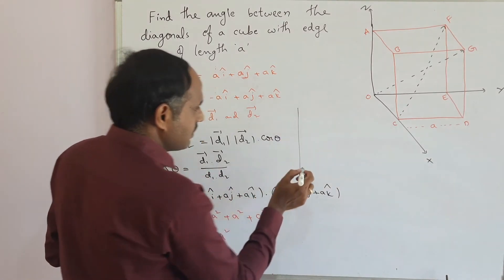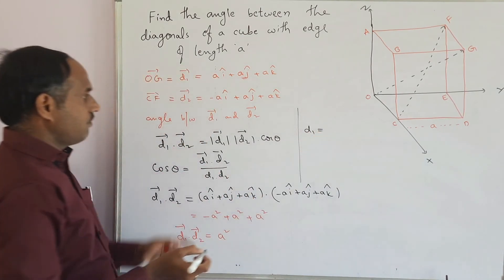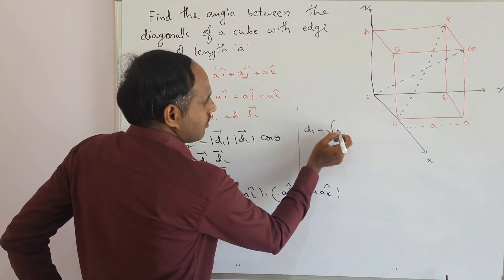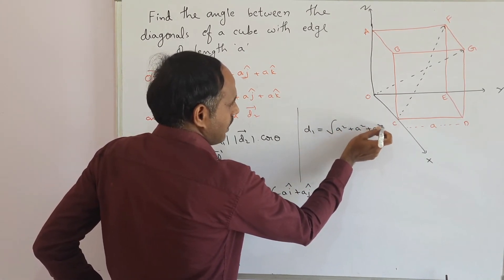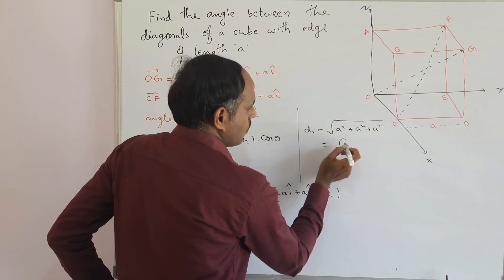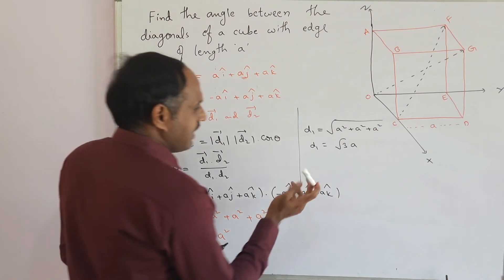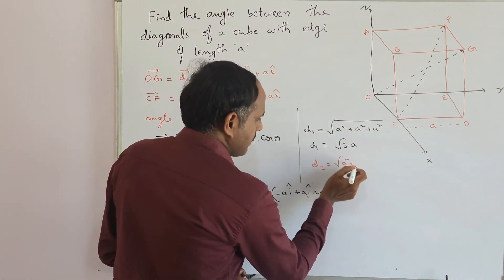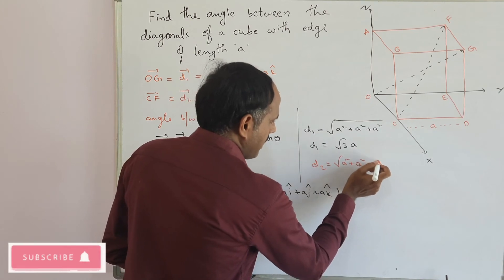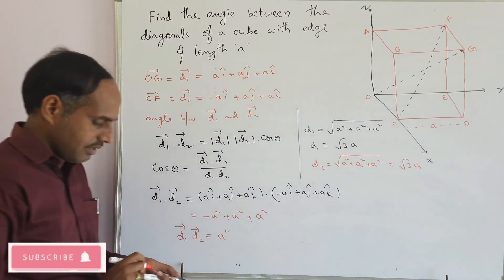Now, I am finding the magnitudes of D1 and D2. Magnitude of D1 is under root of A square plus A square plus A square, which gives root 3 A. Similarly, D2 is also the same: A square plus A square plus A square, which gives root 3 times A.